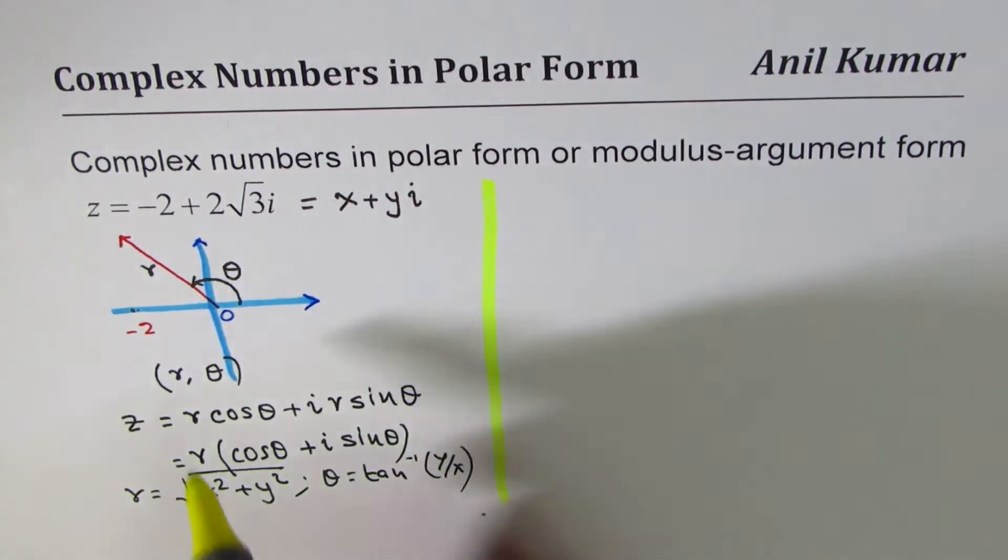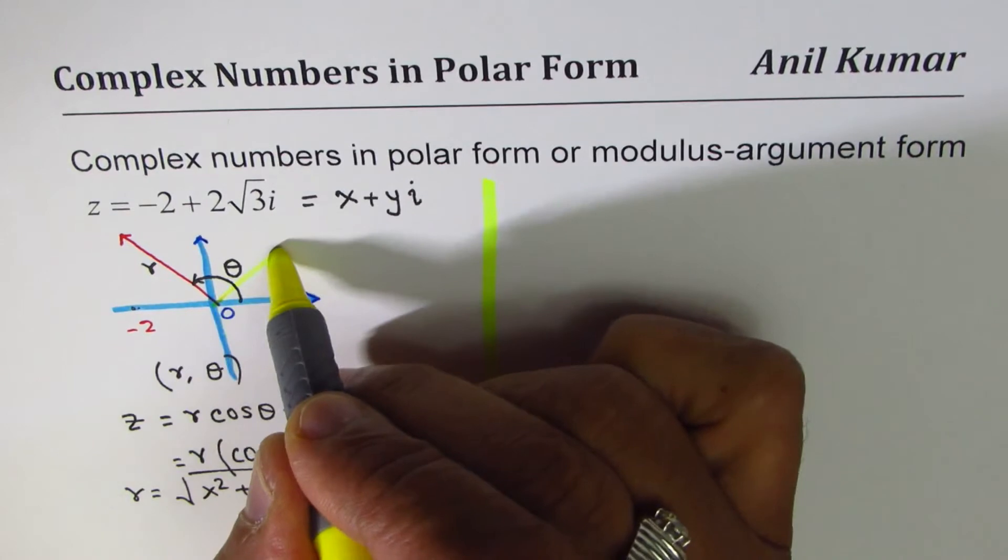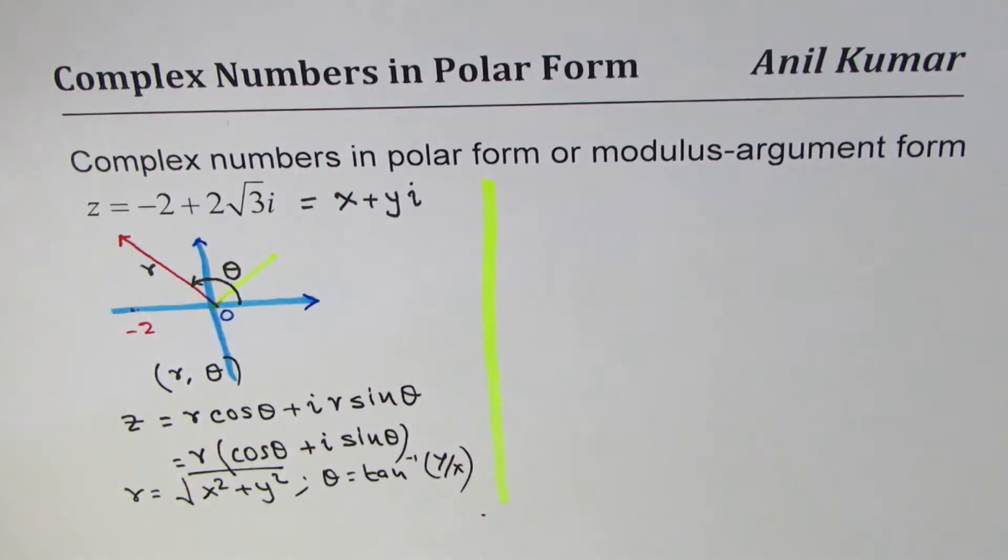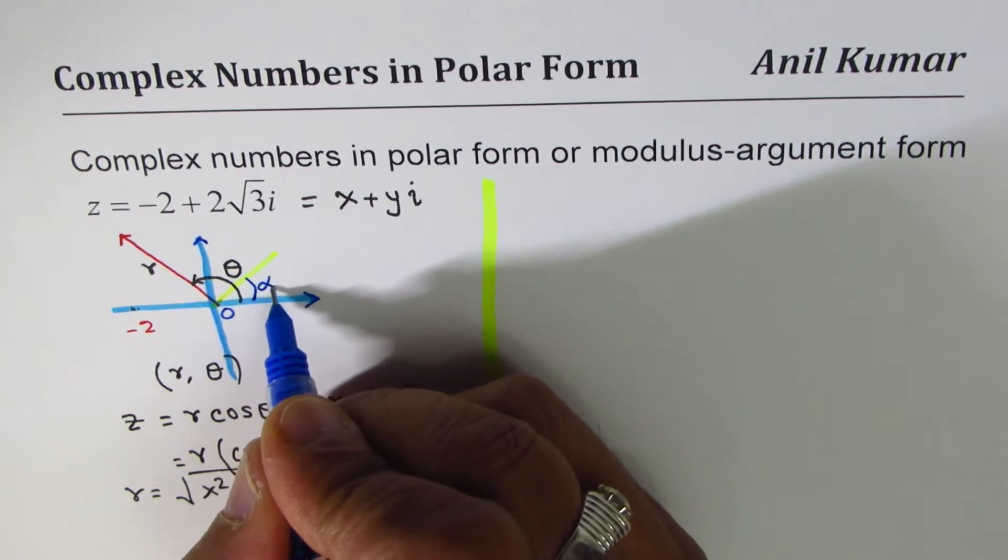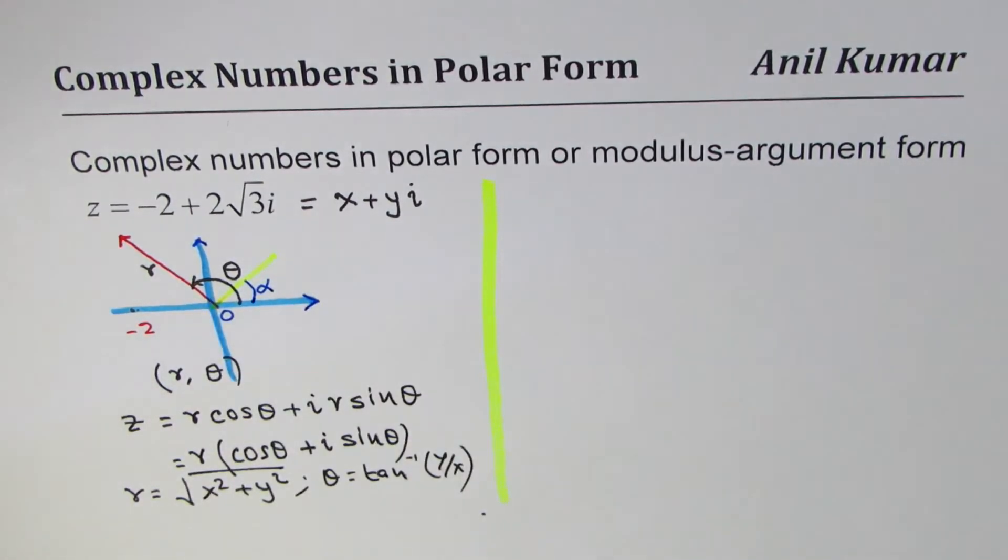To find theta always, we have to start with the acute angle. To find theta, you have to first find the acute angle, and then theta. So those are the two steps involved. Remember that part. So you can actually pause the video now, answer the question, and then look into my suggestions.